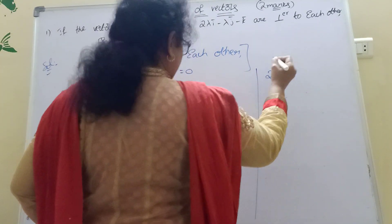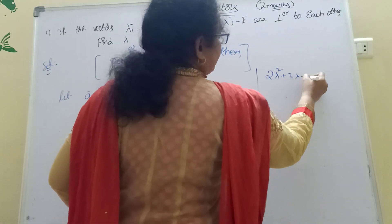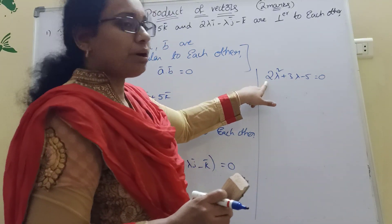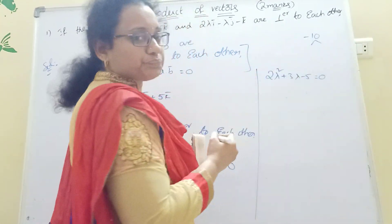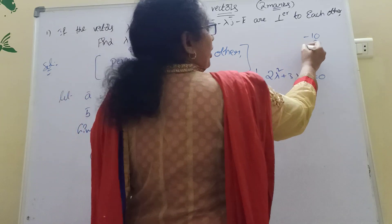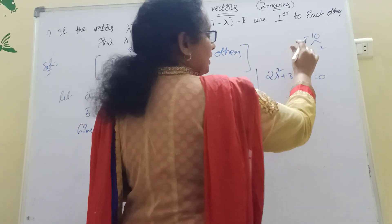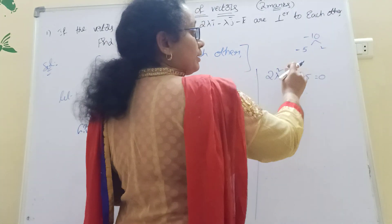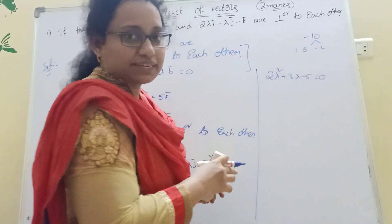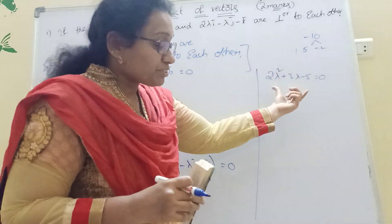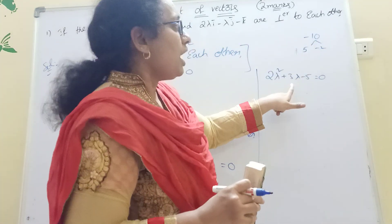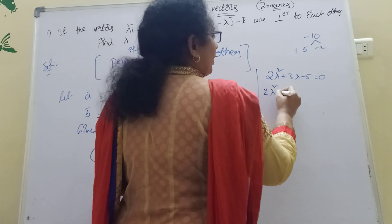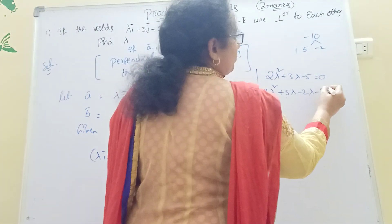This gives us the quadratic equation: 2 lambda squared plus 3 lambda minus 5 equal to 0. To factorize, take a into c: 2 times minus 5 equals minus 10. We need two numbers that multiply to minus 10 and add to plus 3 — those are 5 and minus 2. So we rewrite as: 2 lambda squared plus 5 lambda minus 2 lambda minus 5 equal to 0.